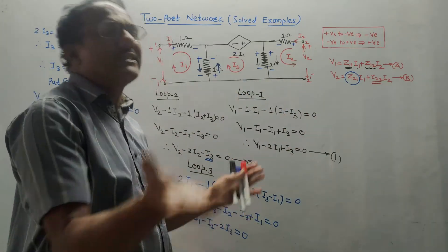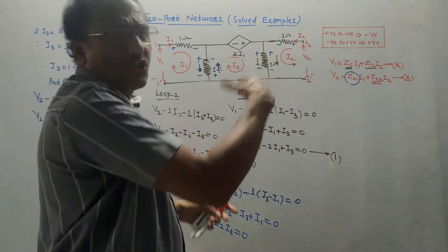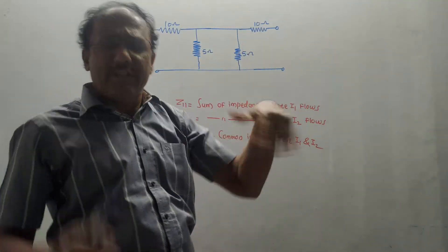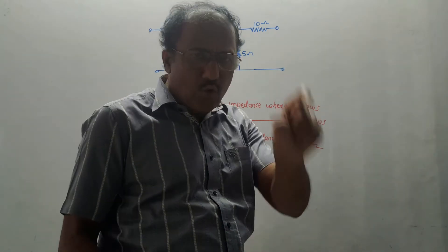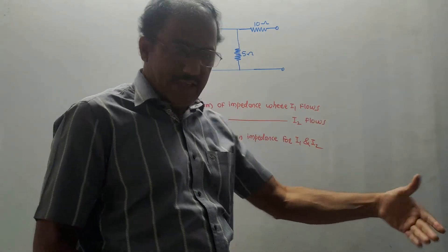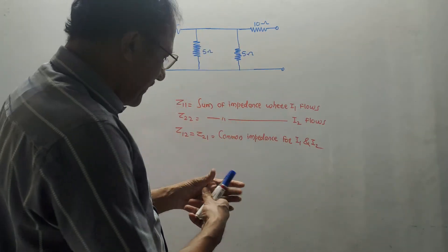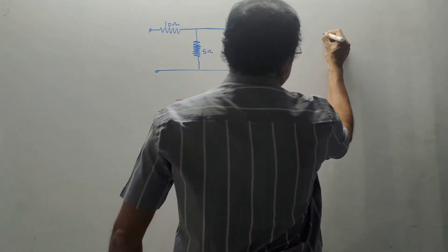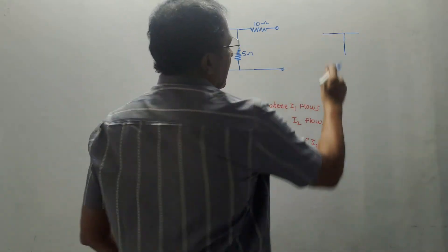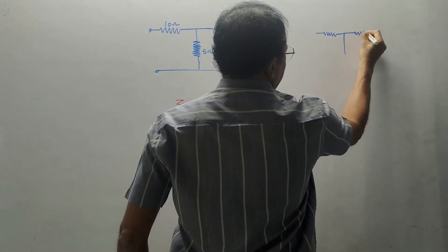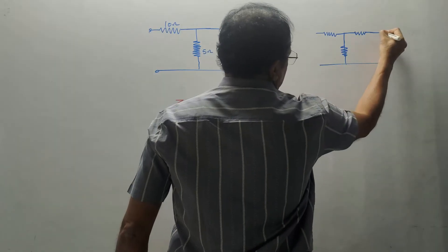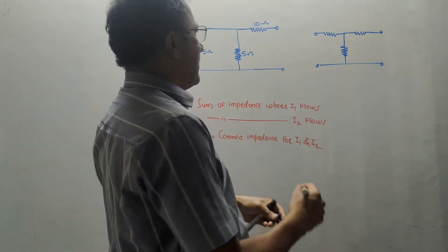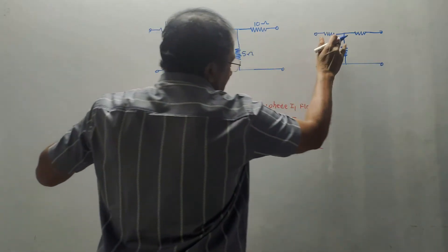Now let us solve a different numerical where KVL is not required. When there is no source in the network, the simplest technique is to convert the given network into the form of a T-network. A T-network has the shape of the English letter T. If you convert the given network into this type of T-network, there are direct formulae available to calculate the Z parameters.